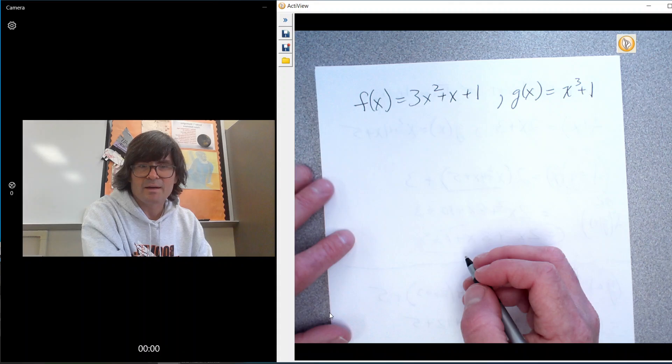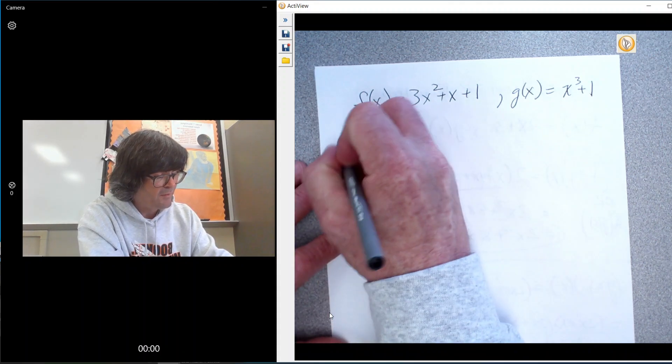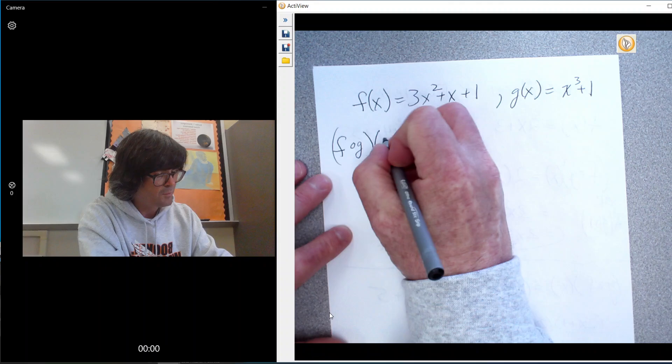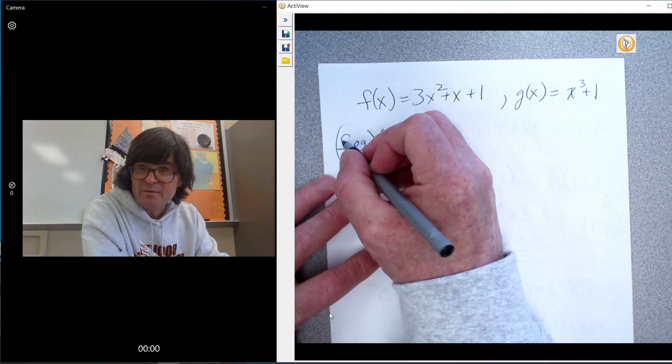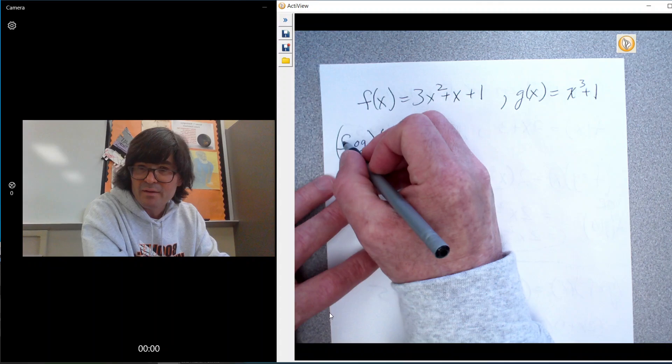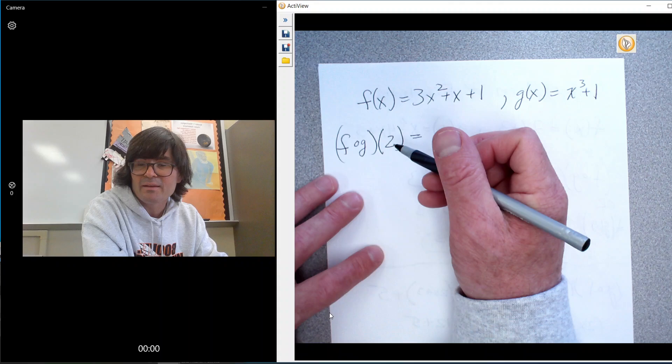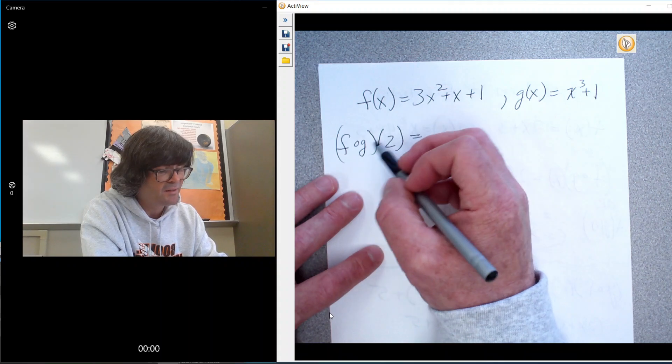So this time, I want to do f of g of 2. So what that means is I'm going to put g into f and then put 2 into everything that you have at the end.